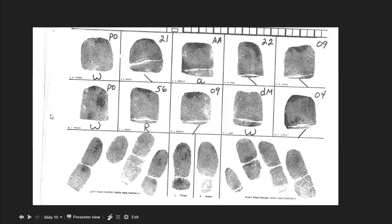So now you know how to differentiate between radial and ulnar loops, and you also know how to do the notation on the fingerprint card — using slashes for ulnar loops, writing R's for radial loops, and how to write in the ridge counts as well.